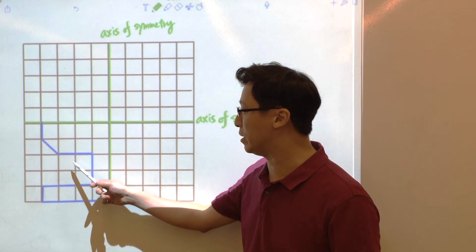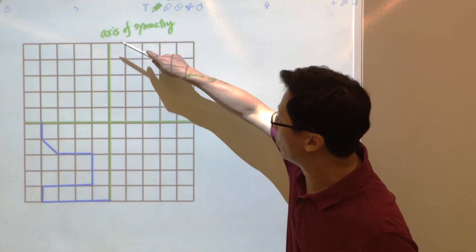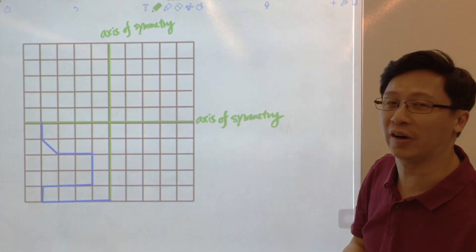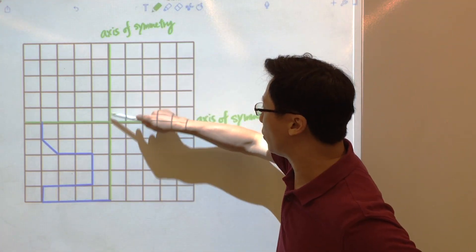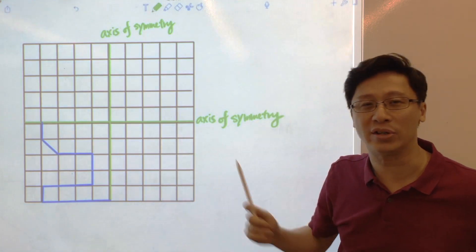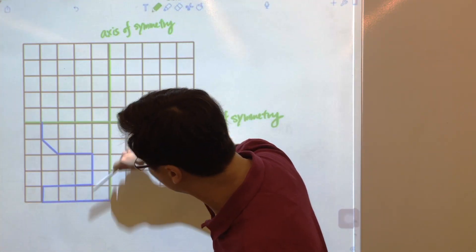Another example. So this one will be a bit more difficult. We have two axes of symmetry, one in the vertical direction and the other in the horizontal direction. And now the blue lines are here.